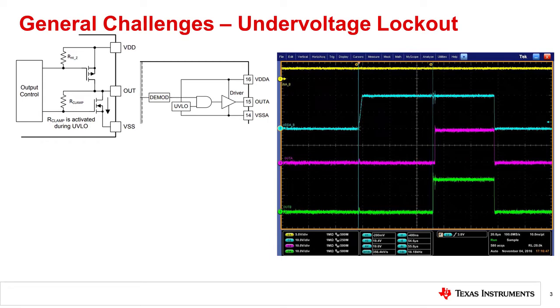Under voltage lockout attempts to protect systems from harm by clamping outputs low if the control circuitry or the output drive circuitry does not have a sufficient voltage level.